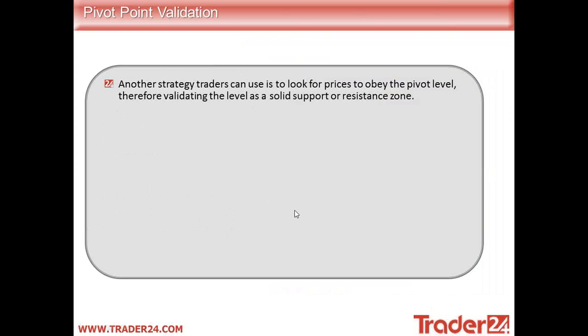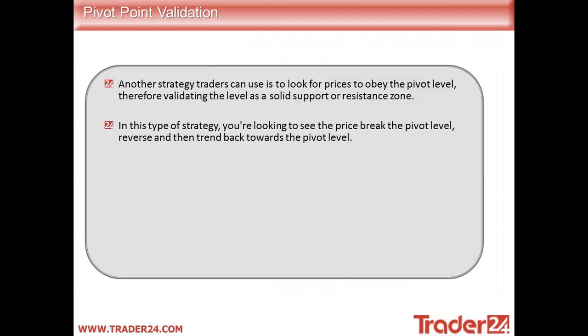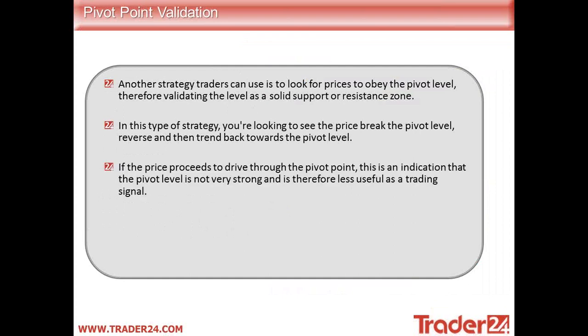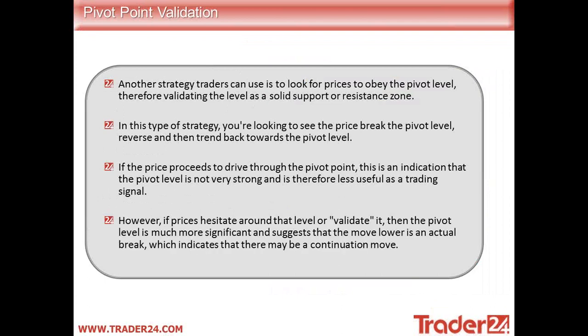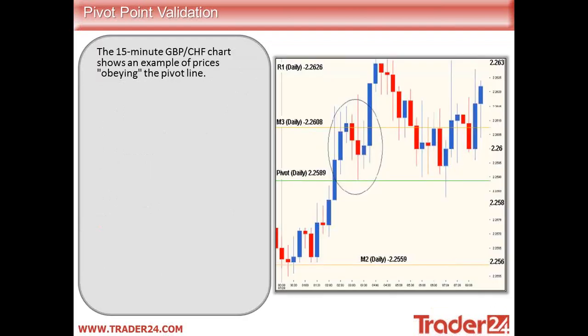Another strategy traders can use is pivot point validation — looking for prices to obey the pivot level, therefore validating the level as a solid support or resistance zone. In this type of strategy you are looking to see the price break through the pivot level, reverse, and then trend back towards the pivot level. If the price proceeds to drive through the pivot point, this is an indication that the pivot level is not very strong and is therefore less useful as a trading signal. However if prices hesitate around that level or validate it, then the pivot level is much more significant and suggests that the move lower is an actual break, indicating there may be a continuation move.